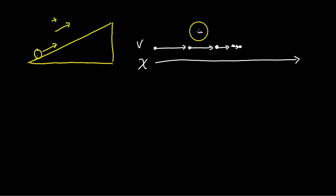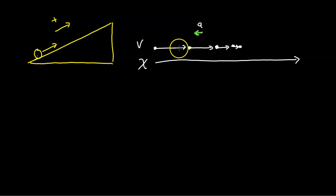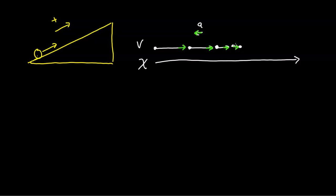Whenever an object is slowing down, the acceleration is in the opposite direction as the velocity. In this case the object moves to the right, so the acceleration is to the left. You can think of the velocity decreasing by that amount every second. The object slowing down will have a motion map where dots are getting closer and closer, even though it's still moving in the positive direction.